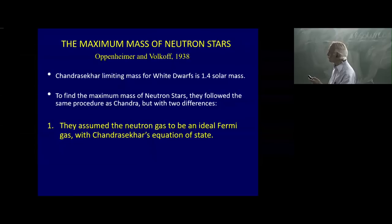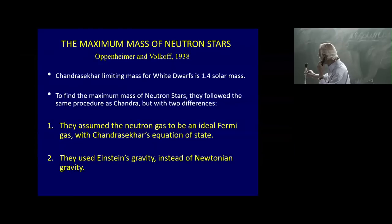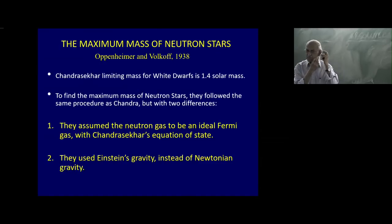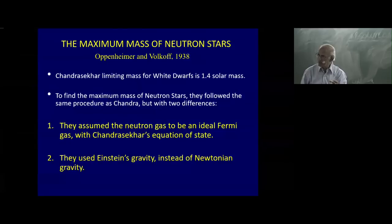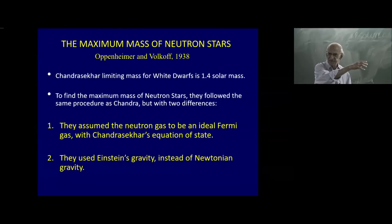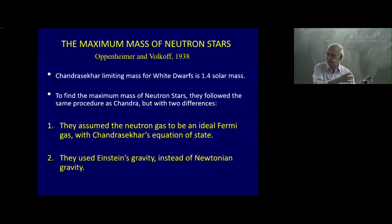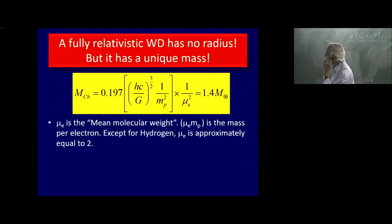But there is one more difference. Chandrasekhar used Newtonian gravity — the equation of hydrostatic equilibrium was dP/dr = −GMρ/r². When you're dealing with a neutron star which is 10 kilometers in size, general relativistic corrections could be important. Therefore, you must replace the right-hand side with the general relativistic expression.